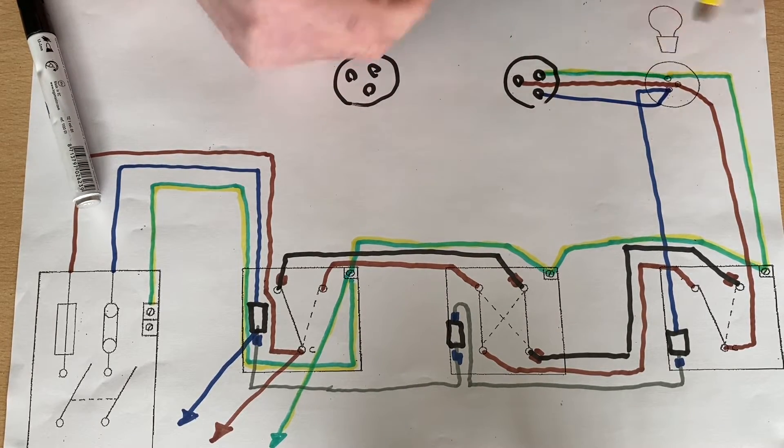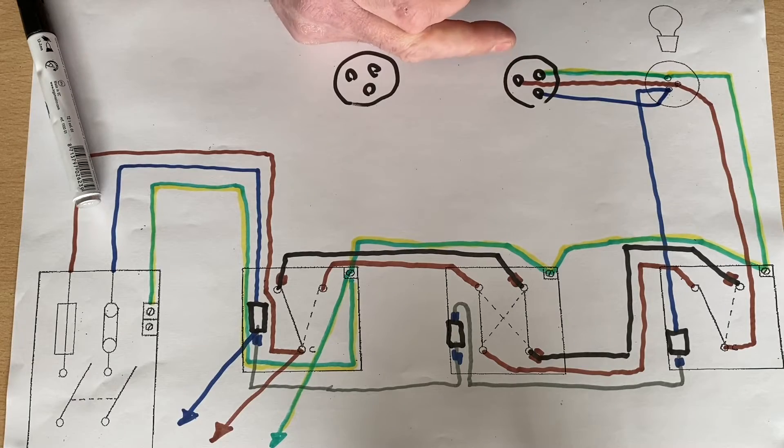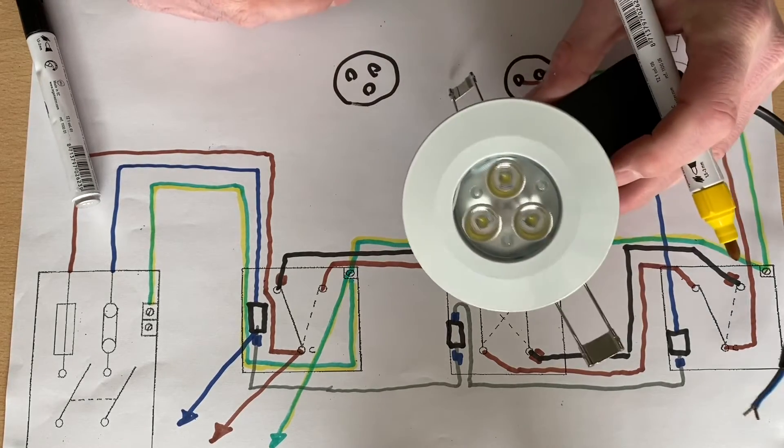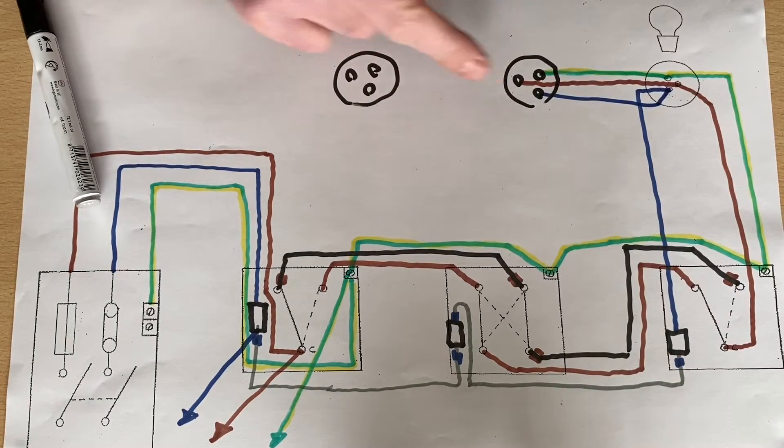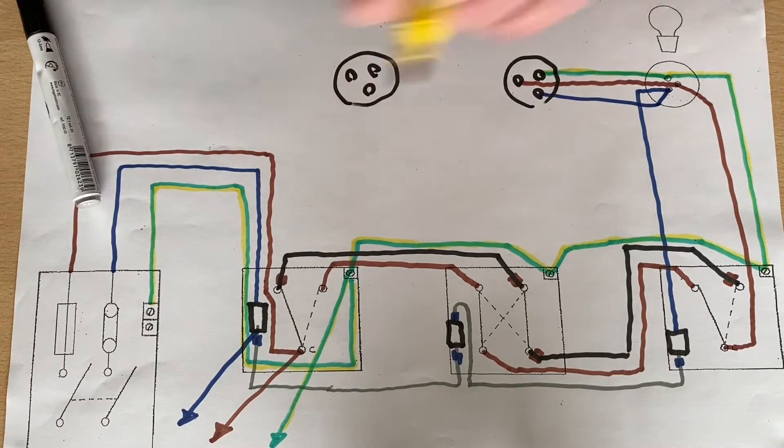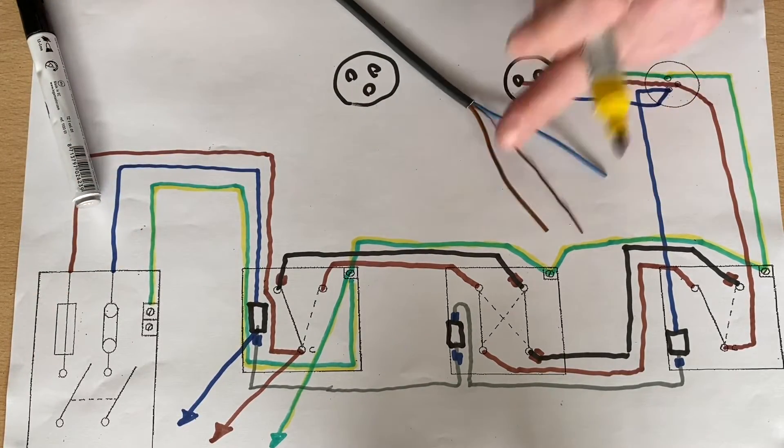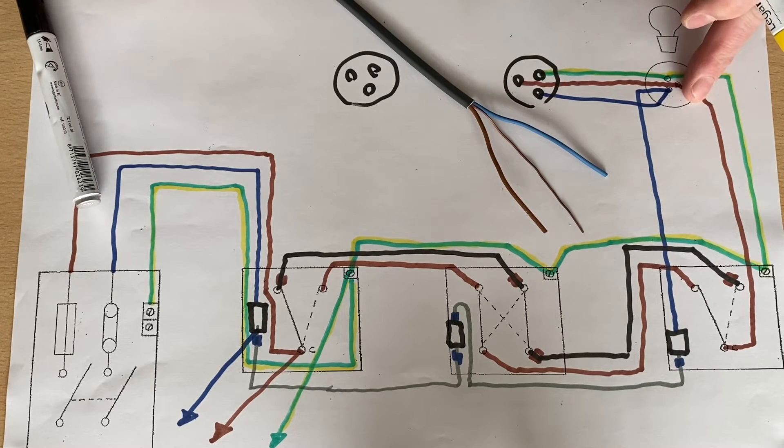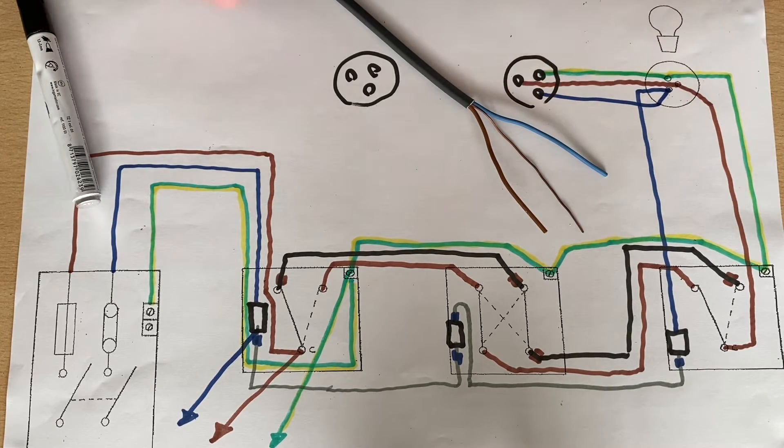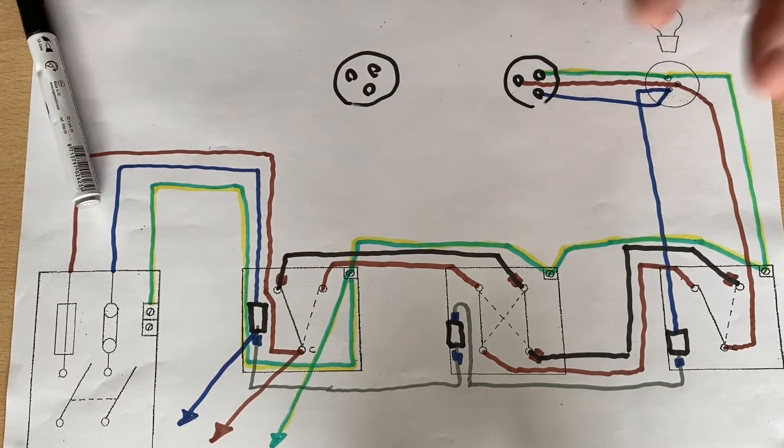We would come out with our neutral, and we would come out with our CPC across to the next light in the area, so that these two lighting points come on together. So now we've added an additional LED down light by just introducing another cable.